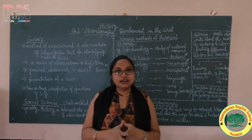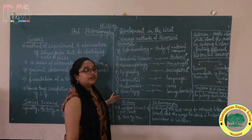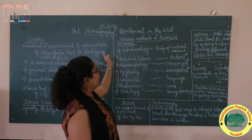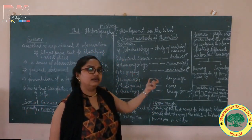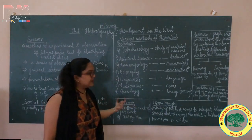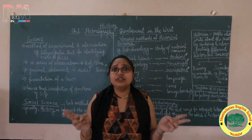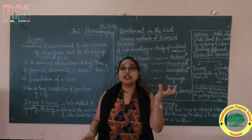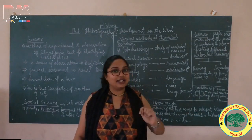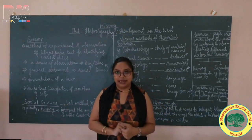So till here we are clear about the difference between Science and Social Science, the way to carry out historical research, and the different methods available. Now let us move on. Look at the title of the chapter — Historiography. I have made a small differentiation between history and historiography, because I think we might get confused. If I make you understand by differentiating between the two words, you will understand it better and remember it for a longer time.